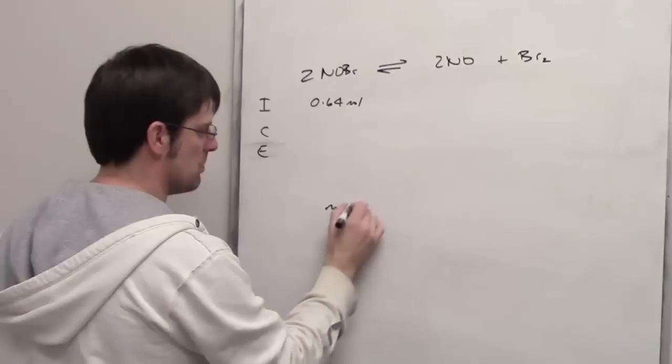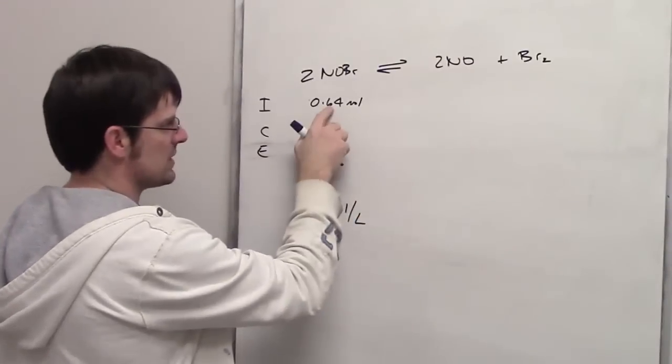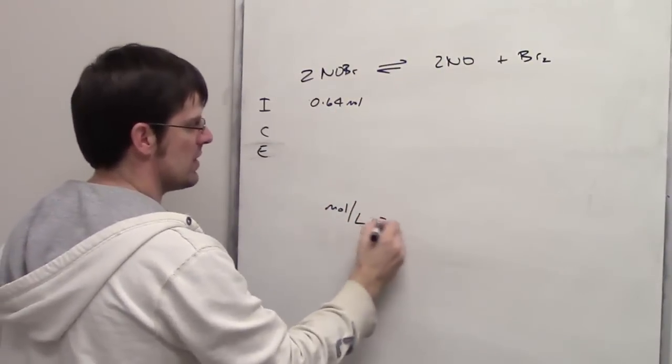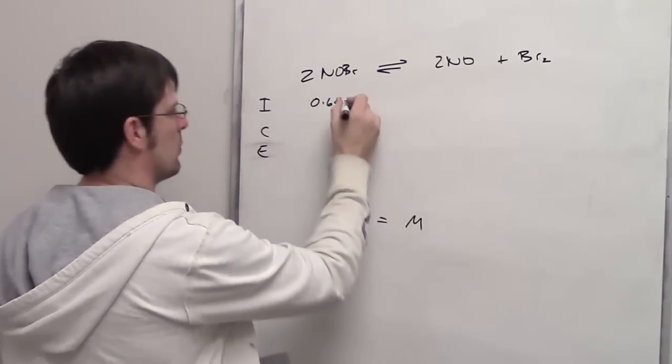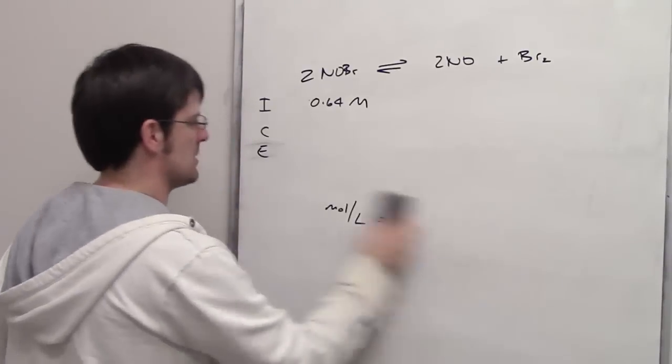If I have 0.64 moles in 1 liter, then what's the molarity? Well, it's that divided by 1, which comes out to be 0.64 molar. So already this is a pretty nice problem.